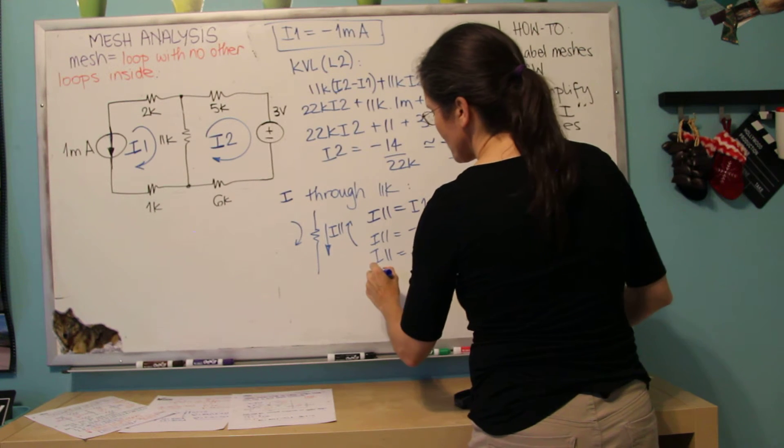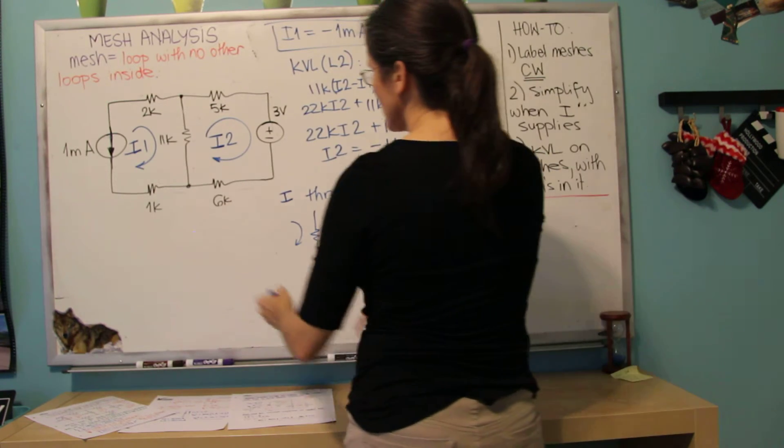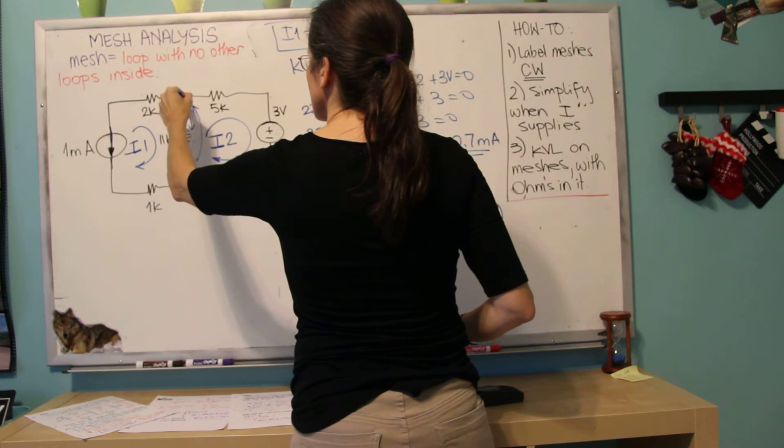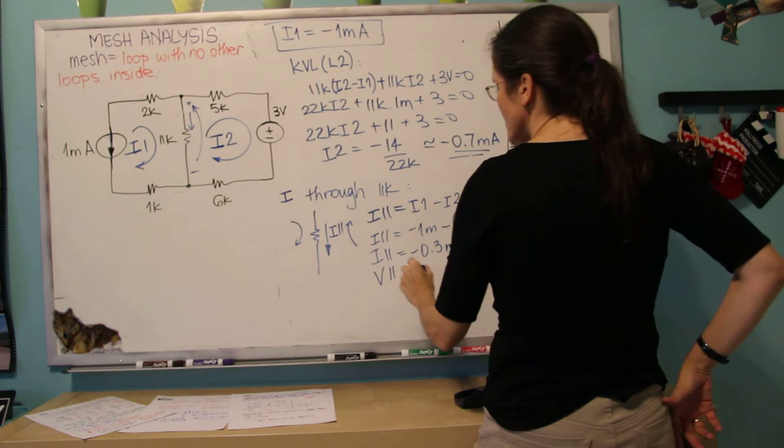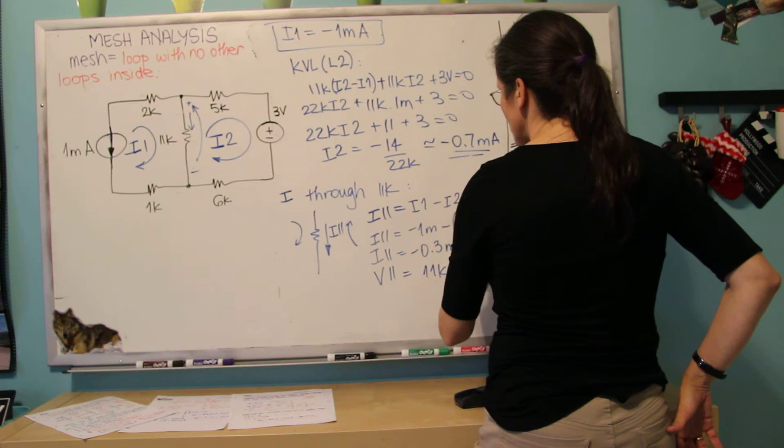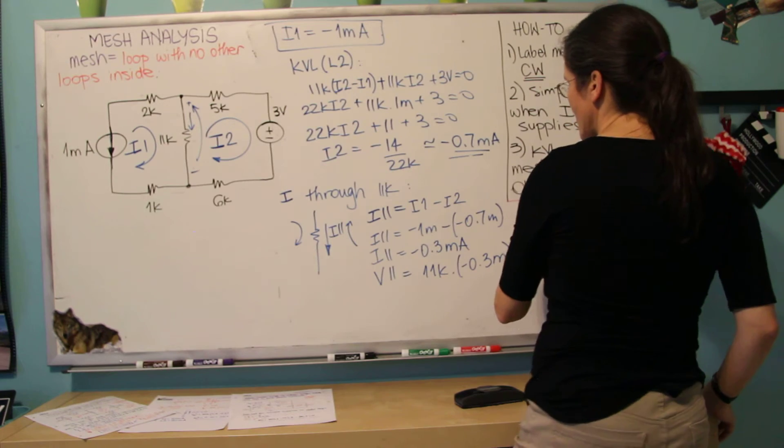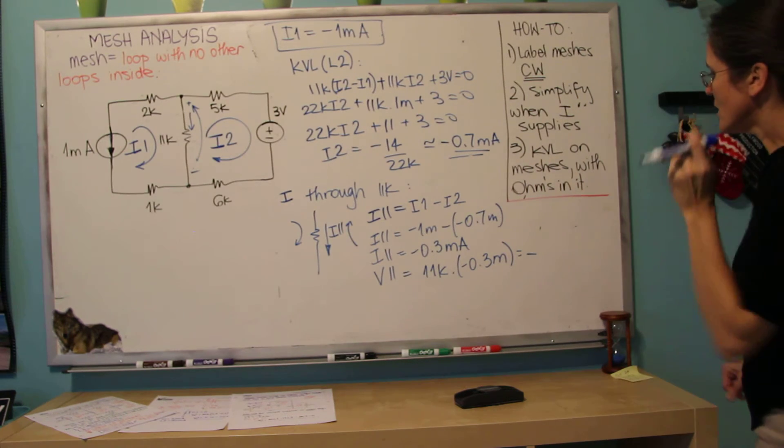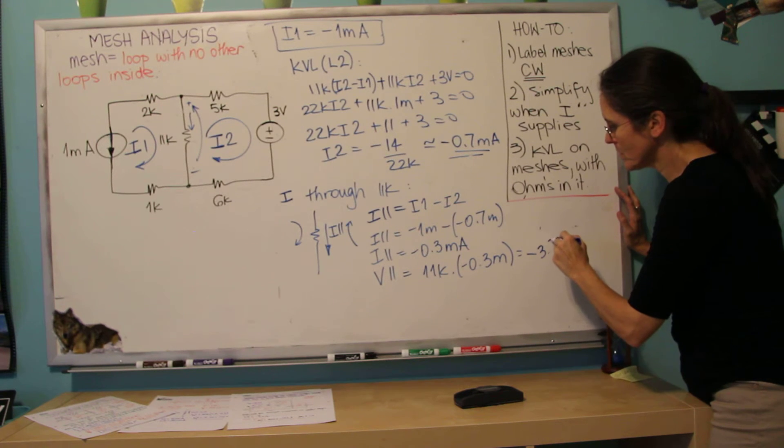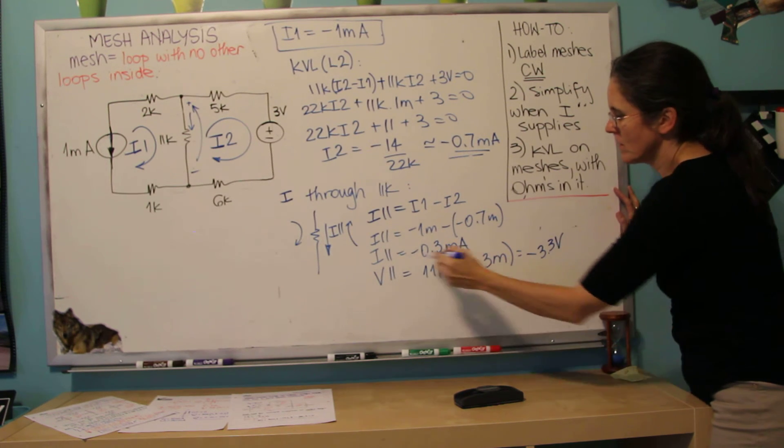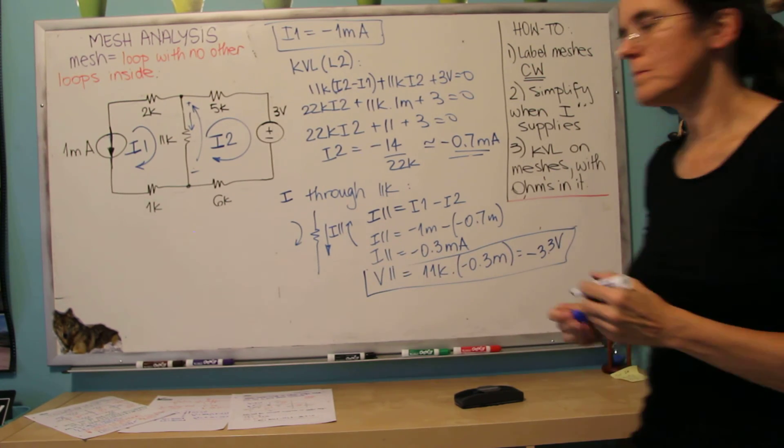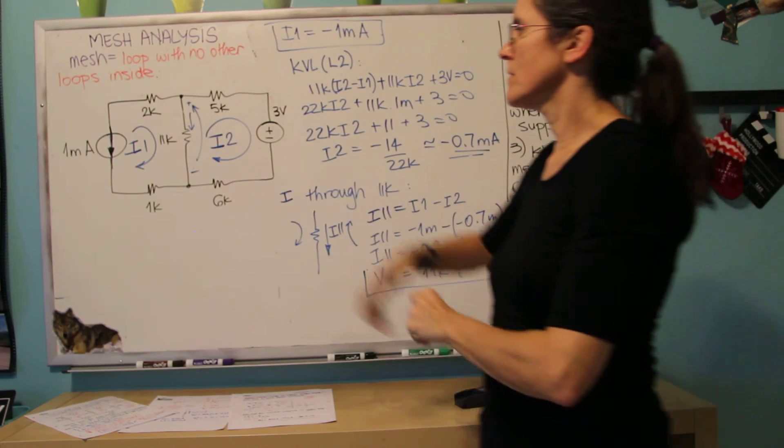And if I wanted to find the voltage across, assuming the voltage, assuming this current goes like this, the voltage across is in this polarity, it will be 11k times minus 0.3 milliamps, which is minus 3 volts, 3.3 volts. This is the voltage across the 11k ohm resistor for the circuit.